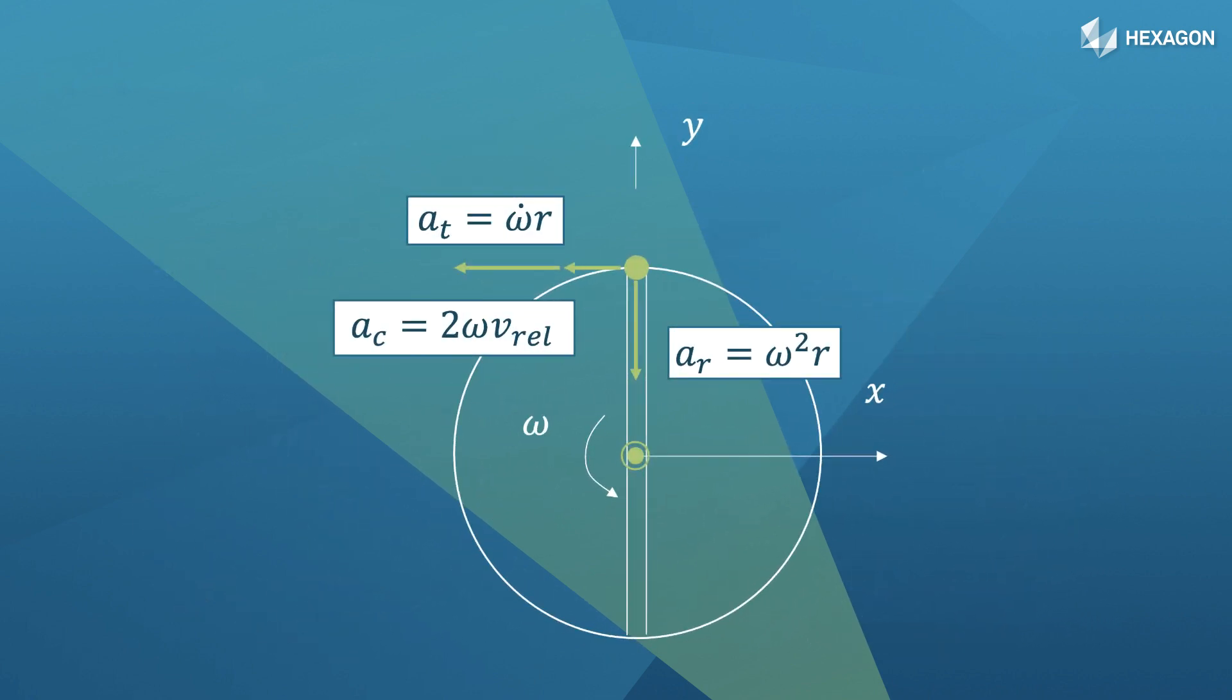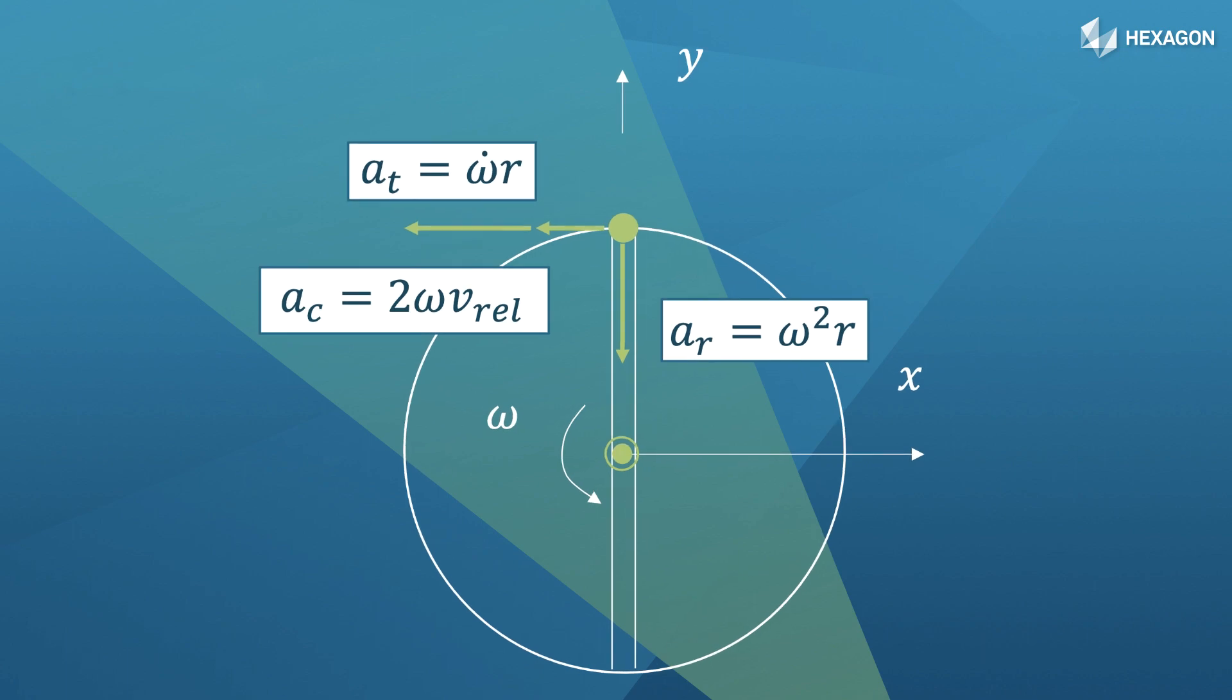And finally, there is the third component of acceleration called the Coriolis component. Its value is given by two times your relative velocity multiplied by the rotational speed. It also acts in the tangential direction.